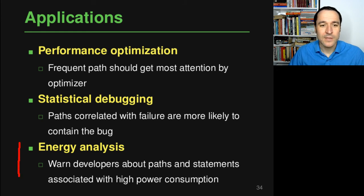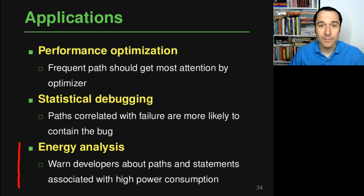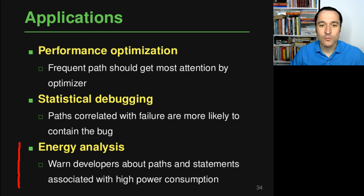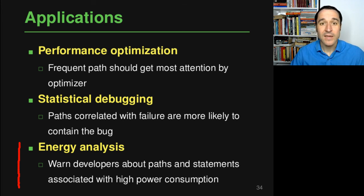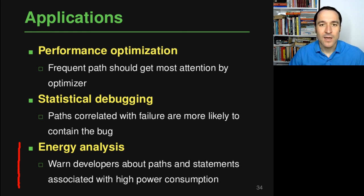Yet another application is energy analysis. For example, mobile applications should not drain the battery too much. There are approaches that warn developers about paths and statements associated with high energy consumption. They perform path profiling as described here, simultaneously measure the energy used during execution, and then correlate these two measurements to highlight paths and statements responsible for high energy use.